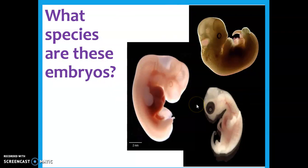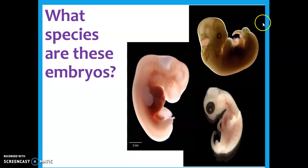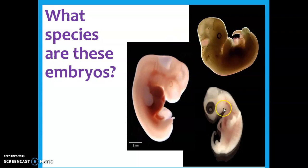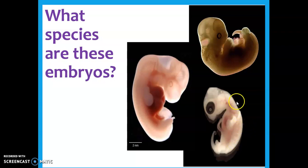Embryology is the study of embryos. Can you tell what species these are just by looking at them? That one looks a little turtle-like — that's a tortoise. This one, with the ears and a little tail, is actually a house cat. And this weird alien-looking one? That's you — the Homo sapiens embryo. When we look at embryos of related species, especially vertebrates — things with backbones — we see remarkable similarities in how they've developed.